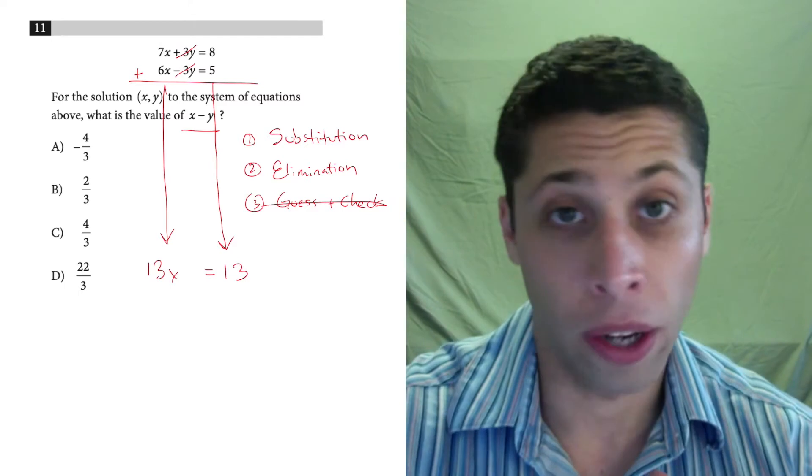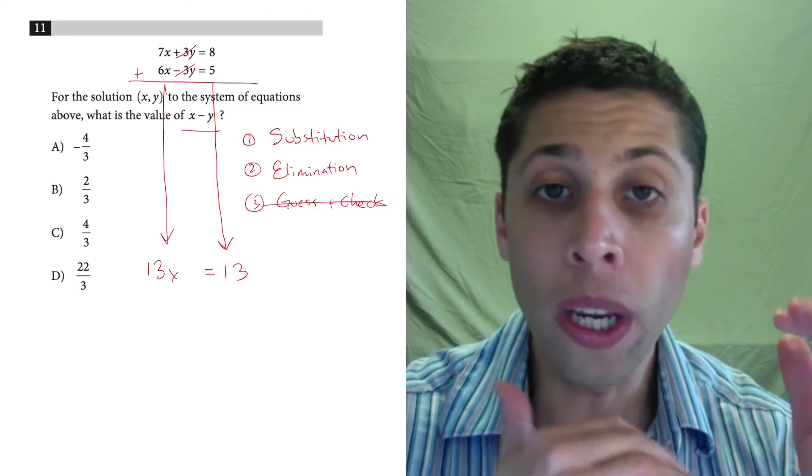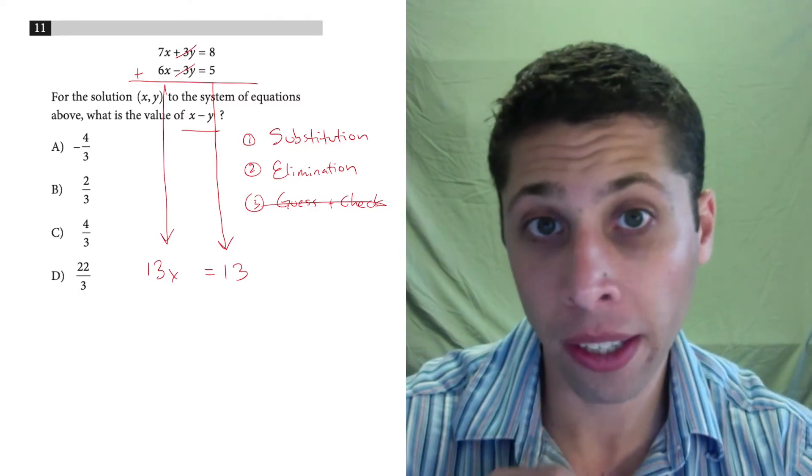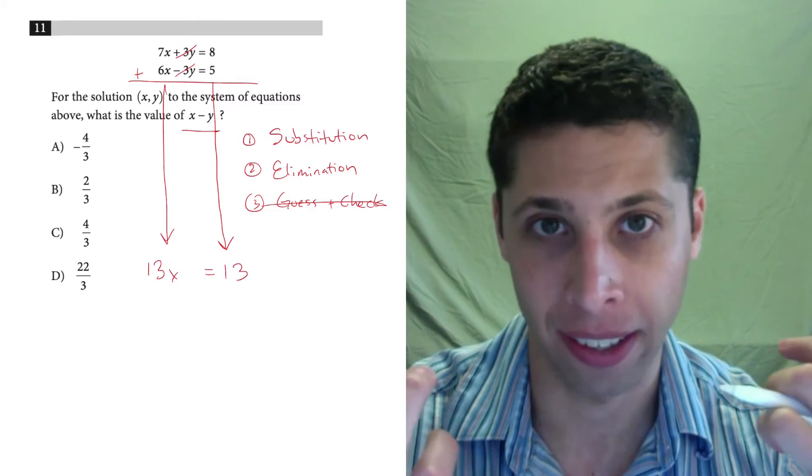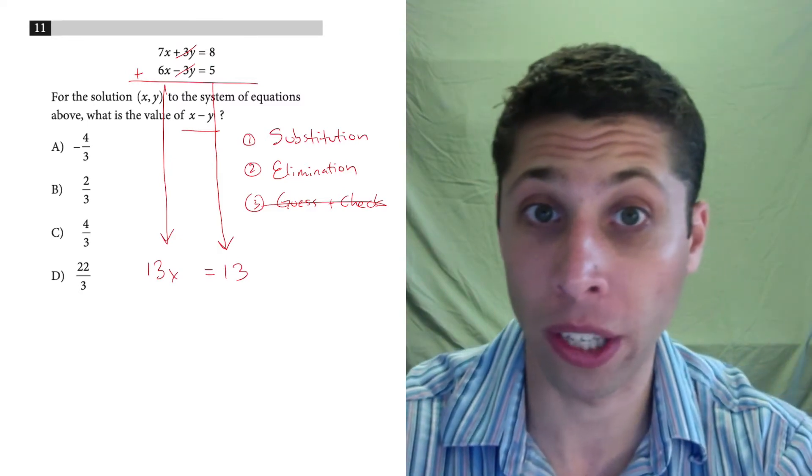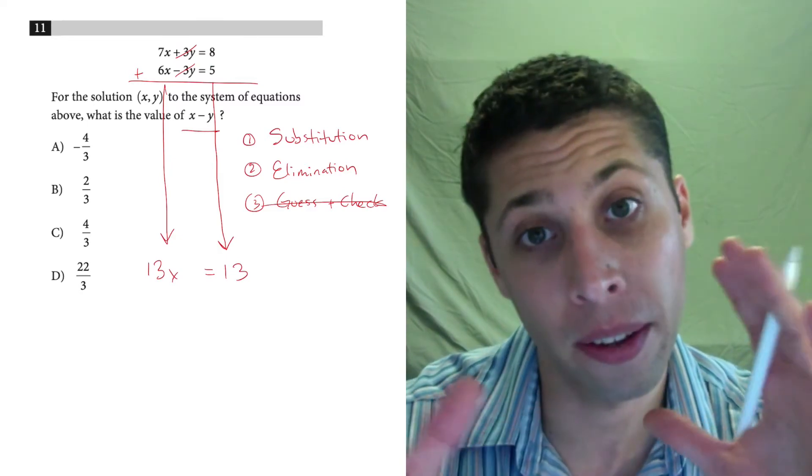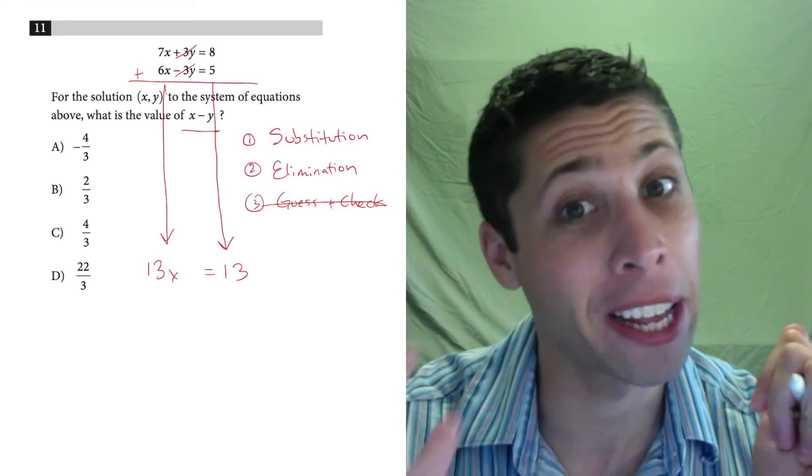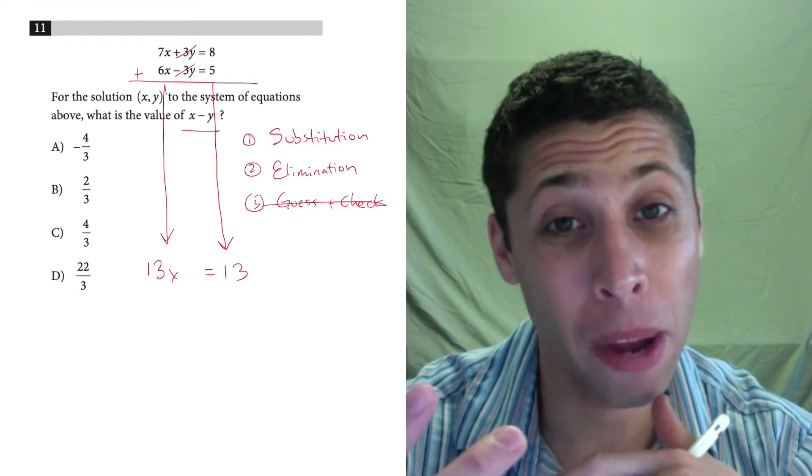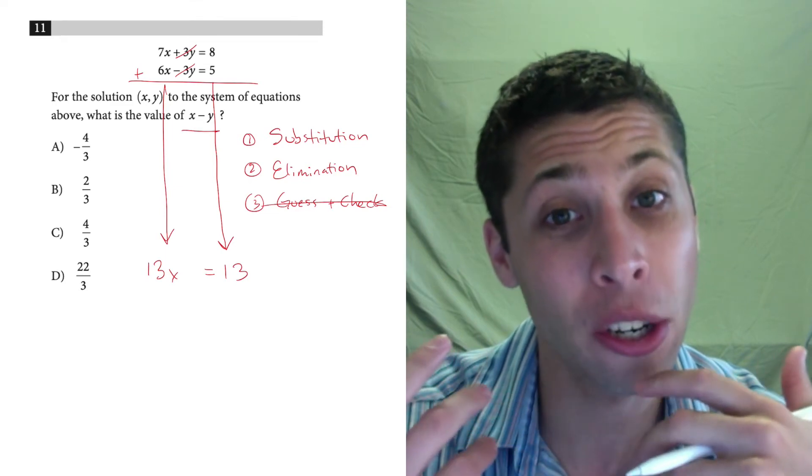So on harder questions with point of intersection, we will have to do other things to make this work out nicely. Sometimes we need to multiply one of the equations by a number so that the variables will cancel out. Sometimes we have to multiply both equations by a number in order to do that. So it can get annoying.